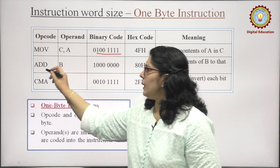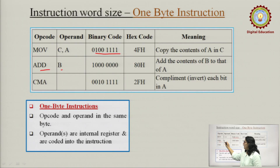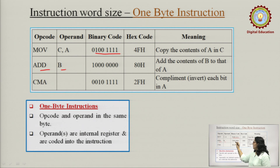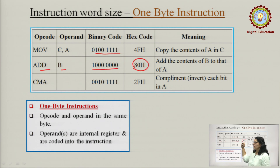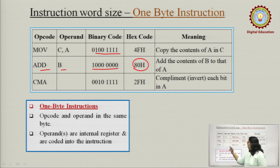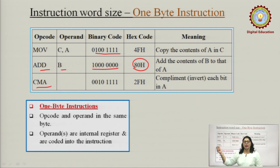Next example is ADD B. Yeh bhi humara one byte instruction hai. Iska ek binary code hai, there is a hexadecimal code for it, aur yeh bhi ek baar mein hi instruction jayega. Then complement accumulator — again this is a one byte instruction.